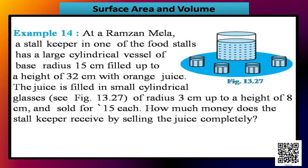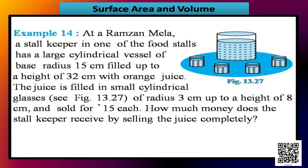Let us now discuss example 14. At a Ramzan Mela, a stall keeper in one of the food stalls has a large cylindrical vessel of base radius 15 cm filled up to a height of 32 cm with orange juice. The juice is filled in small cylindrical glasses of radius 3 cm up to a height of 8 cm and sold for rupees 3 each. How much money does the stall keeper receive by selling the juice completely?